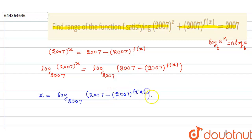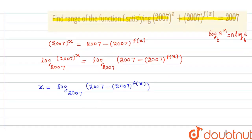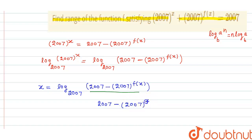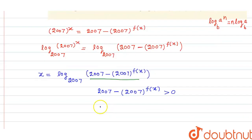Now for this function to exist, the domain must be satisfied. That means the argument of the logarithm must be greater than zero: 2007 - 2007^f(x) > 0. This means 2007 must be greater than 2007^f(x).